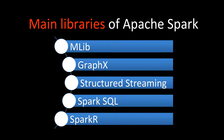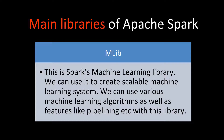Some of the main libraries of Apache Spark are as follows: MLlib, GraphX, Structured Streaming, Spark SQL, and Spark R. Let's see in detail what each of these libraries is doing.